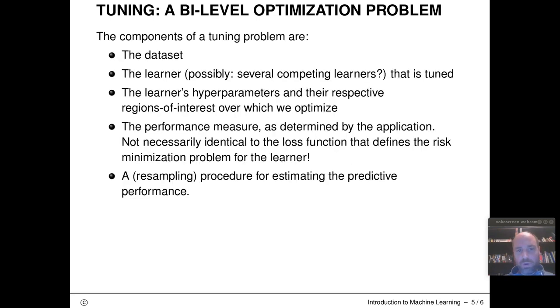And what are the individual components now of this bi-level optimization problem to concretely define this for specific instances? So first of all, there's the data set that we are trying to find our optimal machine learning model on. Then there's the learning algorithm itself. Maybe there's even several competing learning algorithms. Maybe we want to even tune over the potential model class we are trying there.